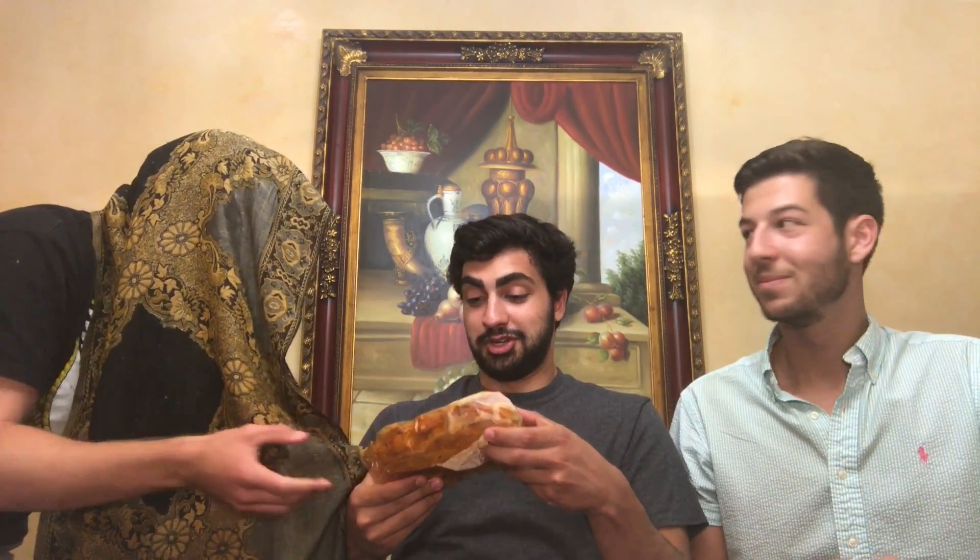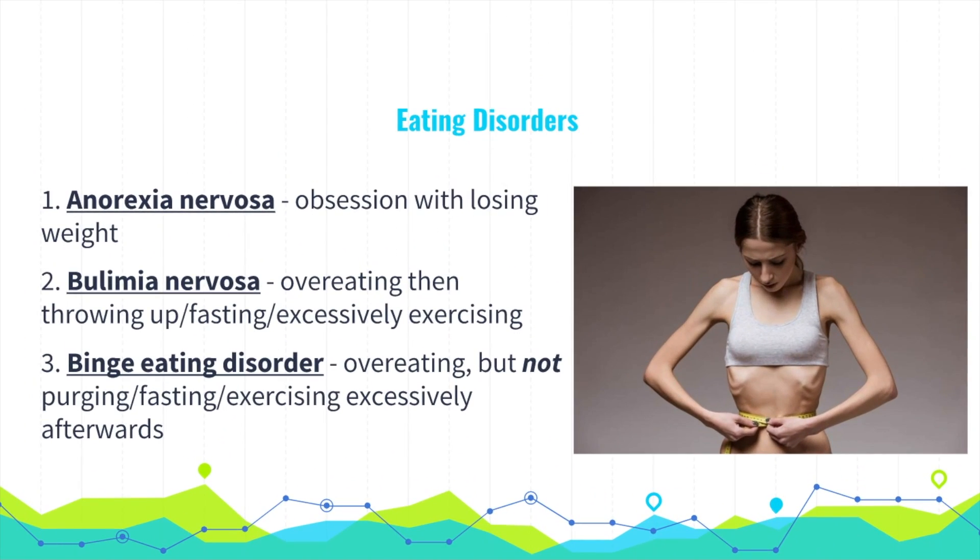Hunger is also influenced by other aspects of biology and culture. Our memory of when we last ate heavily influences our desire to eat — those with memory loss can be tricked into eating dinner three times in the same hour, as long as they don't remember eating before. Culture is also important. For example, when Abe and Frank were in Chinatown, a kind old man offered them horse meat and they declined. Even though they were hungry, they turned it down because it wasn't part of their culture.